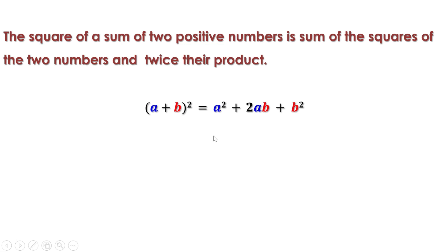We can understand this another way: to find the square of a sum of two numbers, we compute the square of the first number, plus 2 times the first number times the second number, plus the square of the second number. This is the second identity we learn in this lesson.